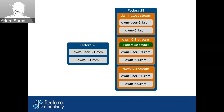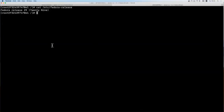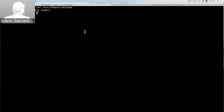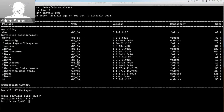There are three streams for DWM and one of them is the default. So if you don't want to care about modules and you upgrade from Fedora 28 to 29, or do a fresh installation and just install the package, everything stays the same. The module will be enabled in the background and it'll just work for you. I can show you how that works in the command line. This is Fedora 28. If I type 'dnf install dwm', it just shows me the package and I can install it.